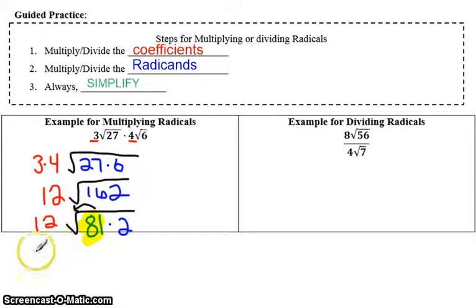So now we have our 12 still on the outside. Our 81, the square root of 81 is 9, and we keep that 2 on the inside because we can't do anything with it since it's not our perfect square. So then we have 12 times 9, 108, radical 2. And that is our final answer.